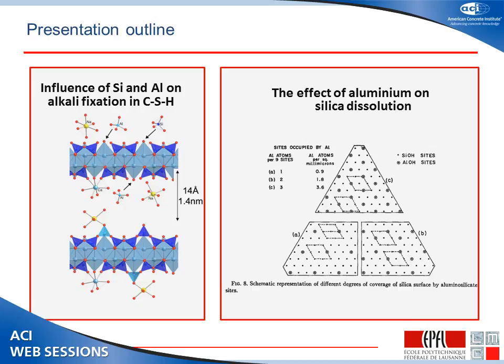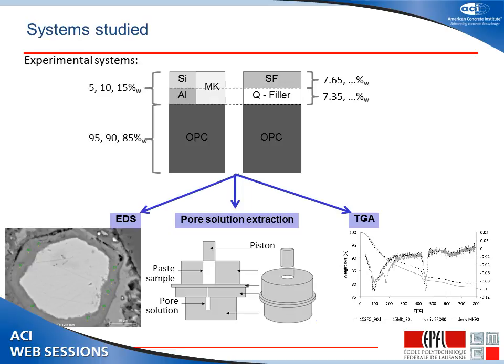It's been well established that SCMs reduce the alkalinity of the pore solution by changing the composition of the C-S-H, which can then absorb more alkali ions. We wanted to compare the effects of supplementary cementitious materials containing only silica versus those containing silica plus alumina, since there's quite a bit of evidence that SCMs containing alumina are much more effective in reducing ASR. We looked at fast-reacting supplementary materials: on one hand, metakaolin, which contains roughly equal amounts of reactive silica and reactive alumina; and on the other, matched samples where the silica provided by silica fume is the same amount as in the metakaolin, with the remainder made up with an inert filler to compensate for filler effects.